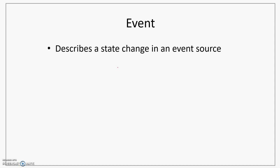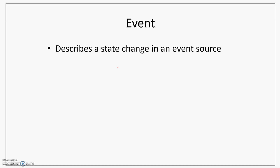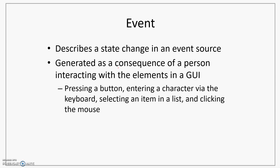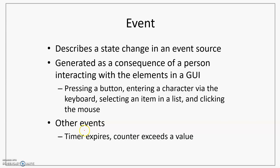Let's summarize. An event describes a state change in an event source, or it is generated as a consequence of a person interacting with GUI components — pressing a button, entering a character through a keyboard, selecting from a list, or clicking with a mouse. There are also events not directly associated with GUI components, such as a timer expiring or a counter reaching a threshold like 10,000.